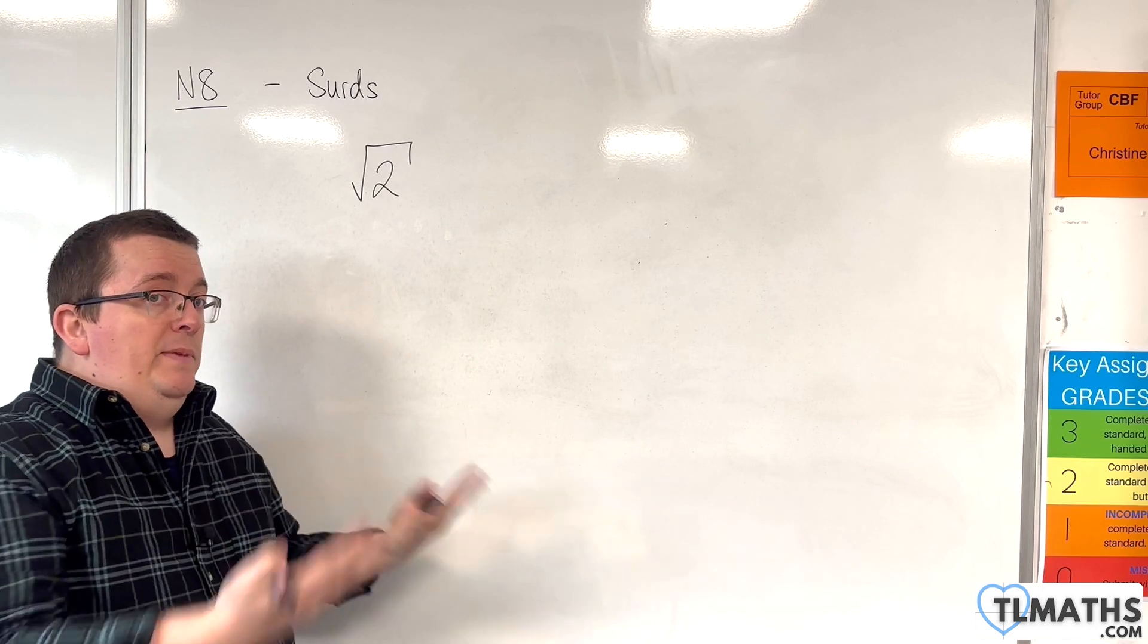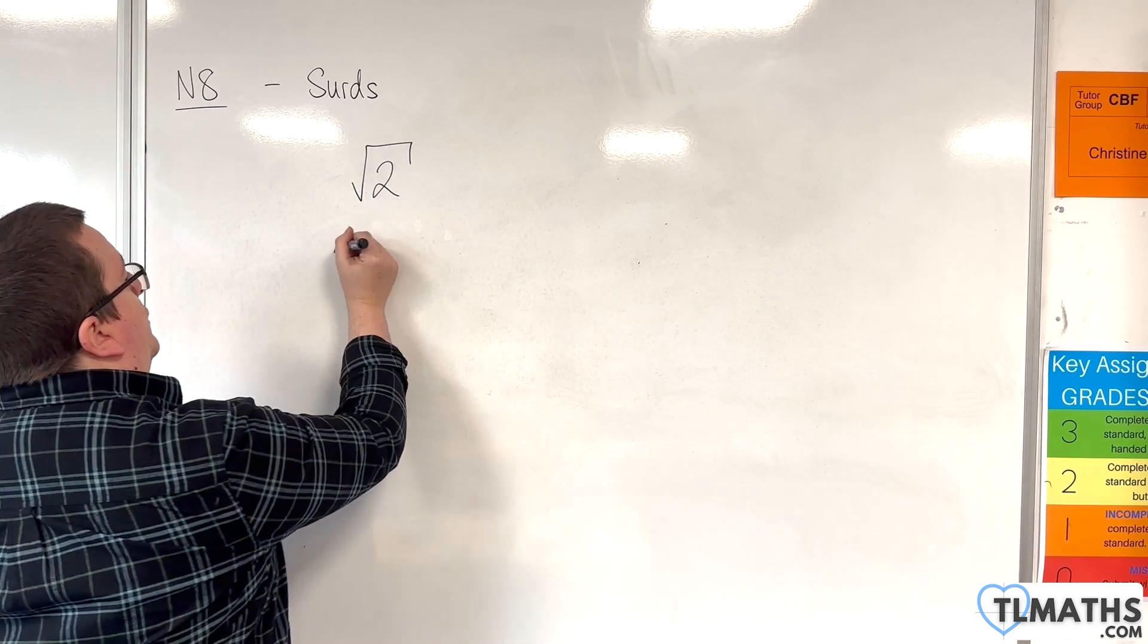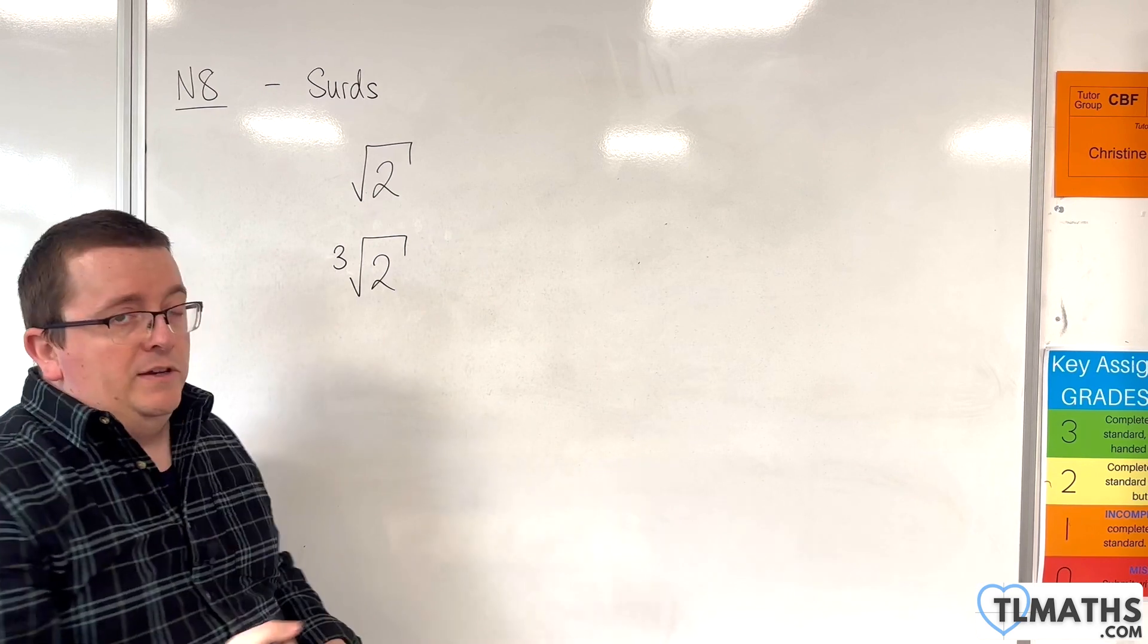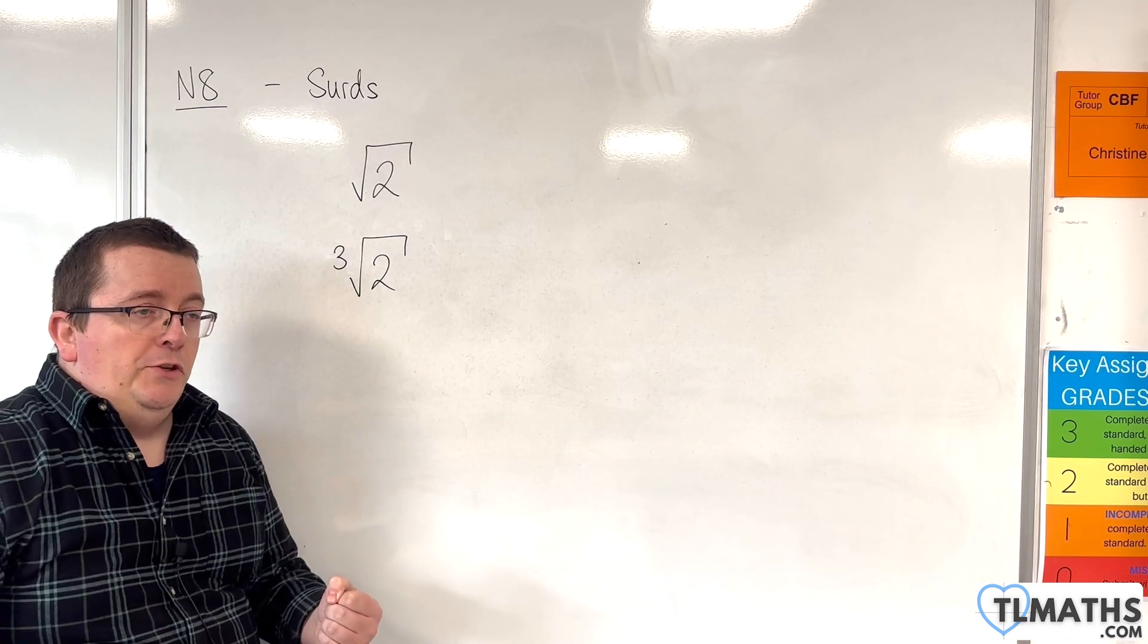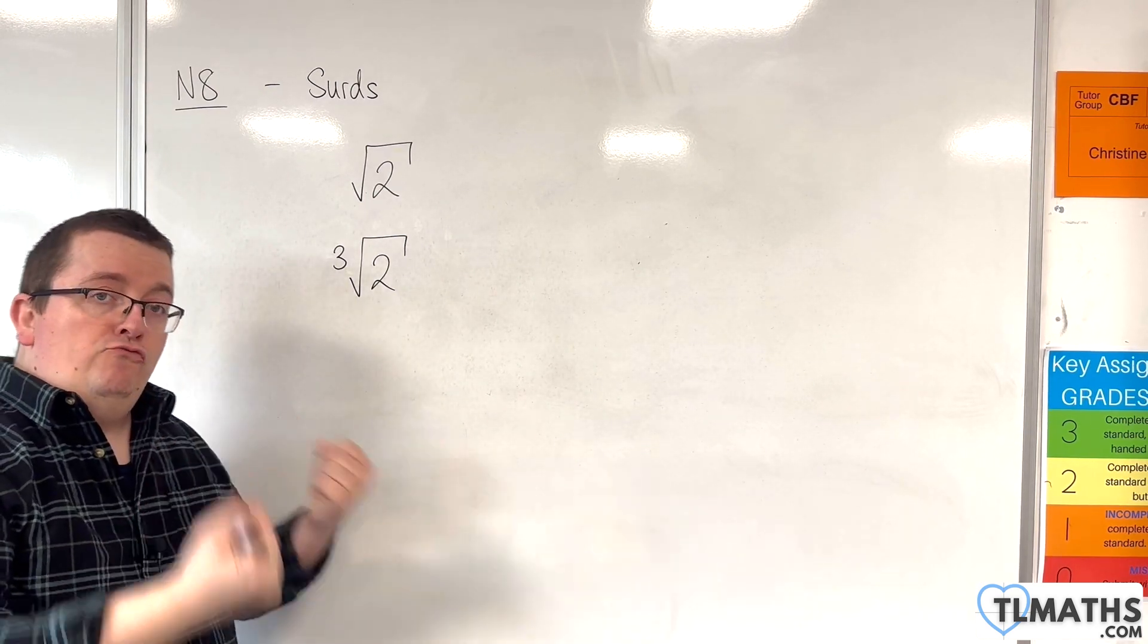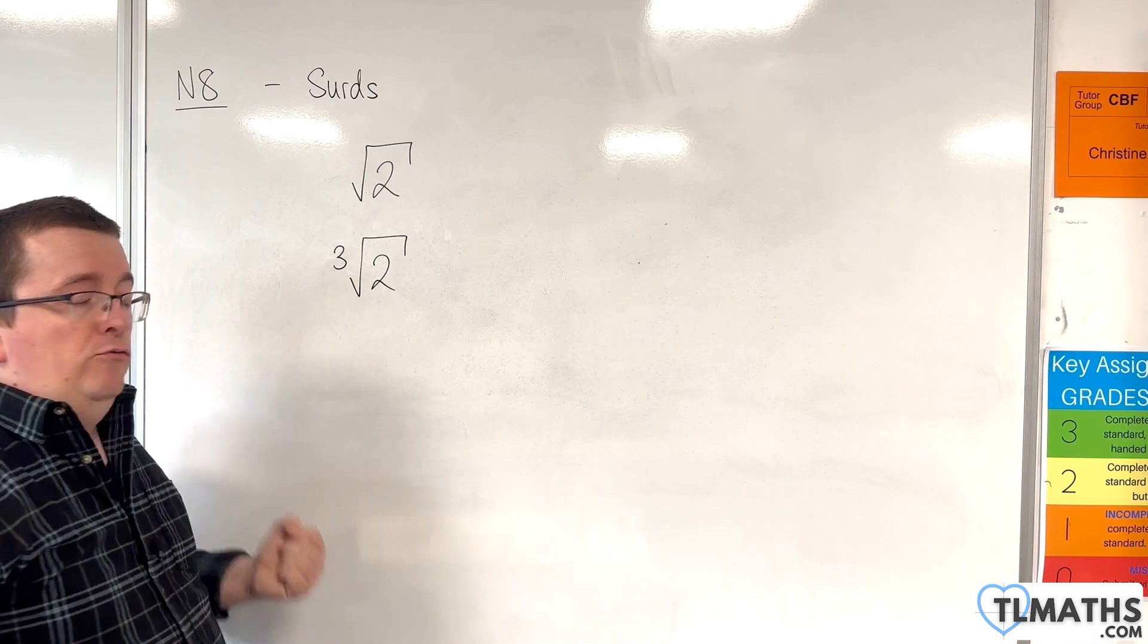Now we don't have to limit this to square roots. We could also have the cube root of two. This is also a third, or the fourth root of two. So we can have nth roots and we would still refer to them as thirds.